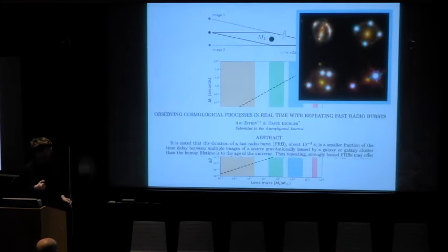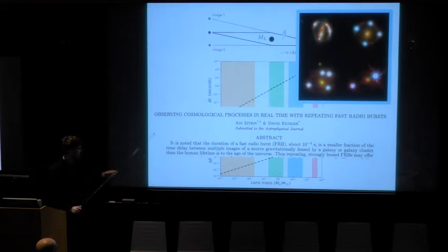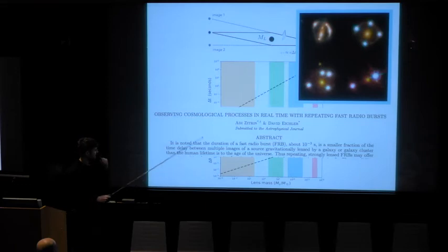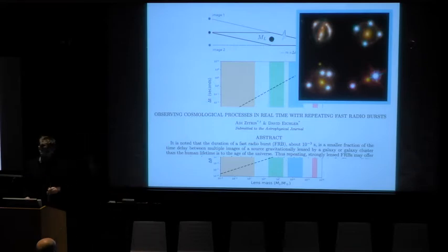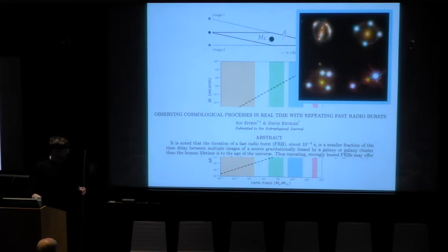This has been discussed in a paper by Zitrin and Eichler, where they talked about trying to do so-called real-time cosmology with a repeating, strongly lensed event. And I include the abstract here, because it starts with the best sentence of any abstract of 2018. It says, it's noted that the duration of an FRB is a smaller fraction of the time delay between multiple images than the human lifetime is the age of the universe. And on and on it goes about how you can actually watch the universe expand in real time if you have a repeating, strongly lensed FRB.